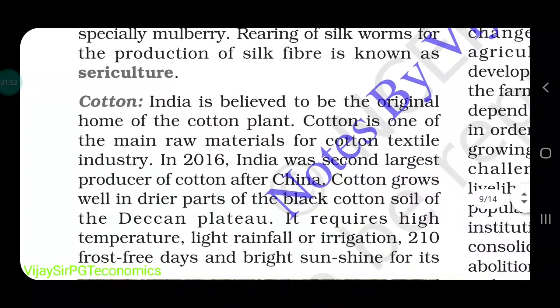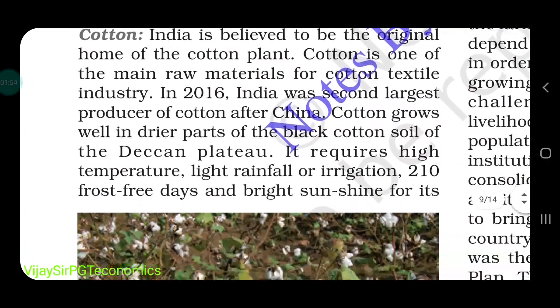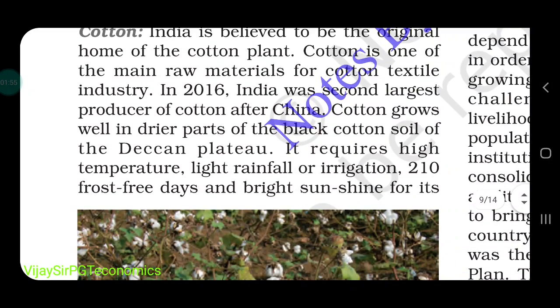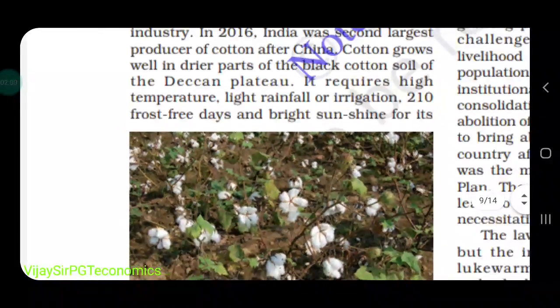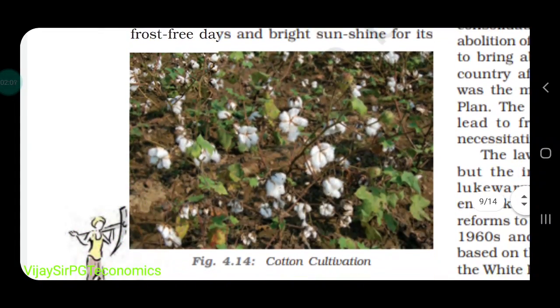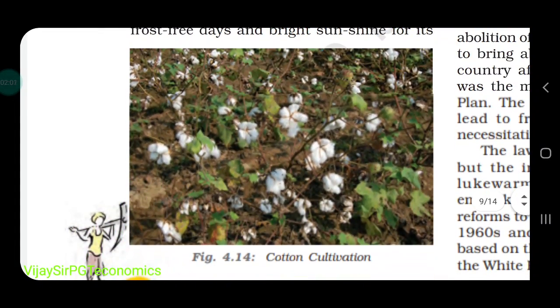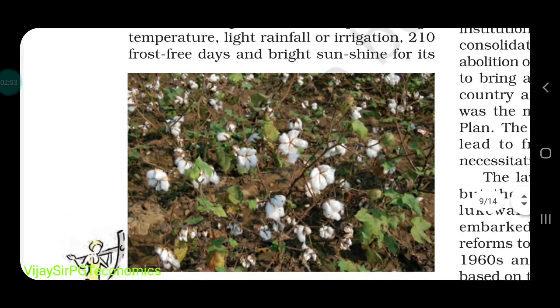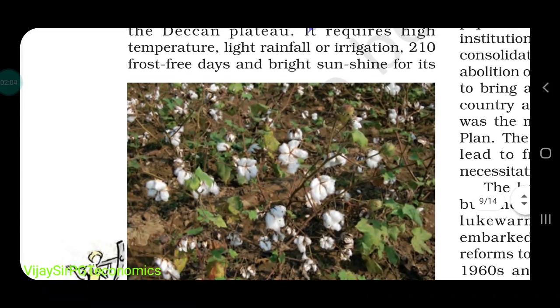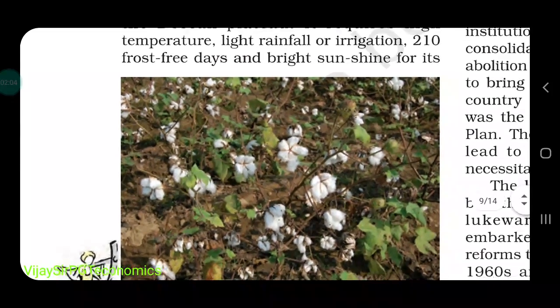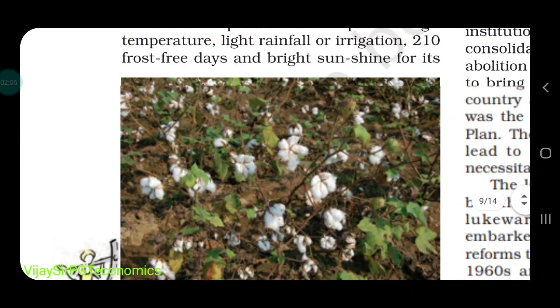Cotton grows well in the drier parts of the black soil of the Deccan Plateau. It requires high temperature, light rainfall or irrigation, and sunshine. Here you can see the picture of cotton agriculture.